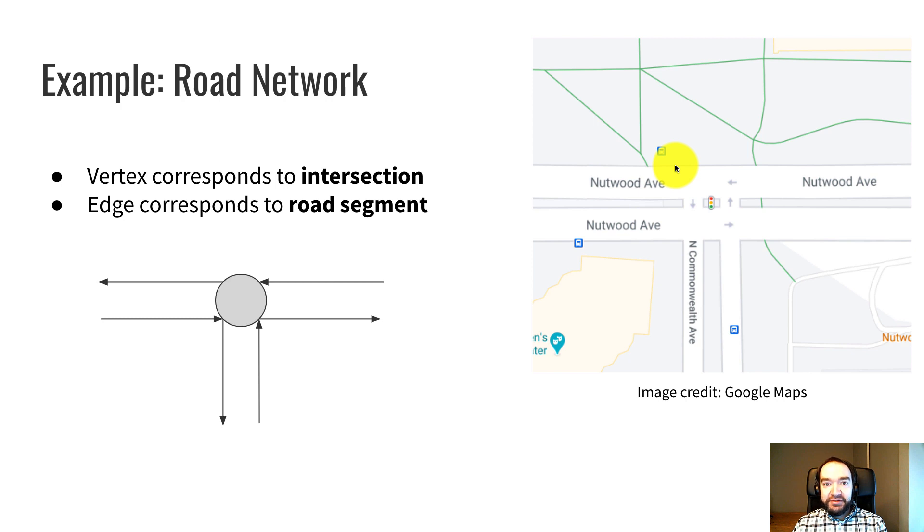So I'm going to go through a couple examples of networks we could model as graphs. One example would be the road network. So this is the network of streets and intersections. So every intersection in the road network would correspond to a vertex in a graph.